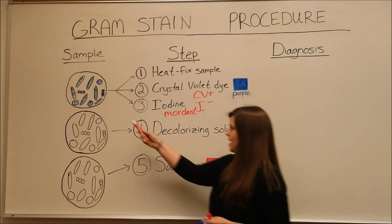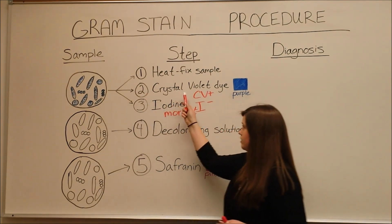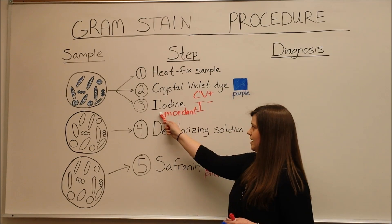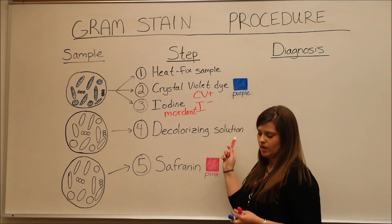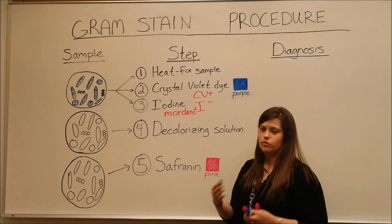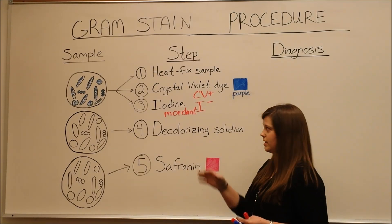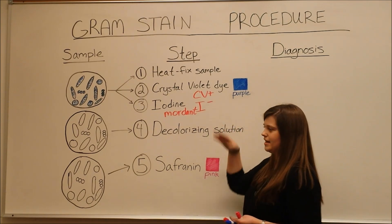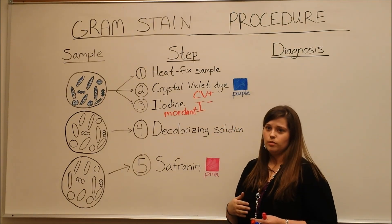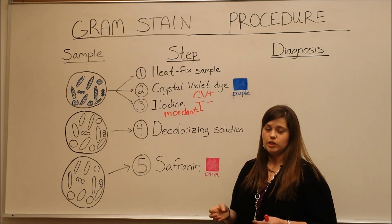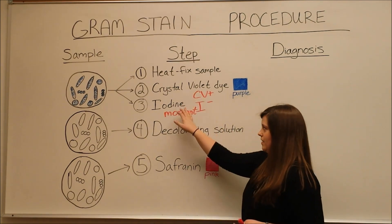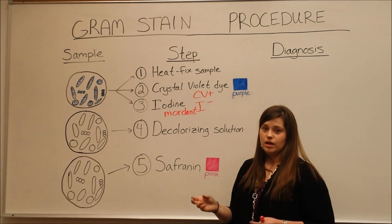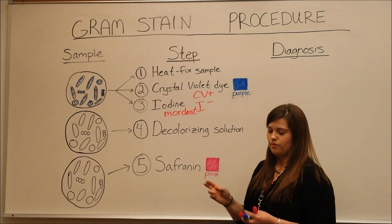After these cells have been treated with the crystal violet primary stain and the iodine mordant, they are treated with a decolorizing solution. The decolorizing solution is usually some form of alcohol that helps the crystal violet and iodine to be washed away from cells where they aren't very strongly adhering. These would be the gram-negative cell walls that only have a very, very thin layer of peptidoglycan, leaving the crystal violet dye and iodine in the gram-positive cell walls, which have that much thicker layer of peptidoglycan.